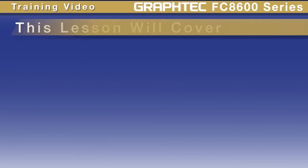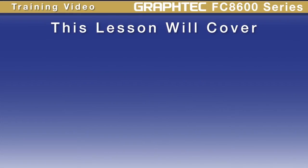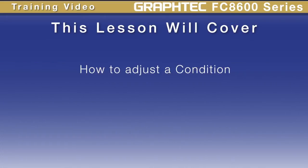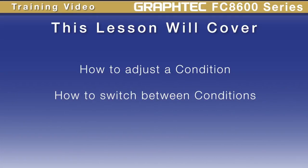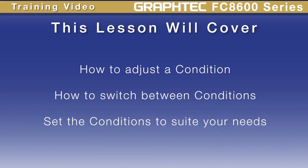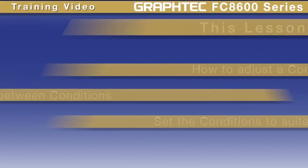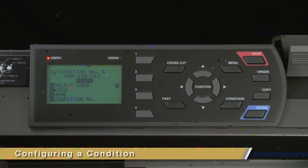The FC 8600 has a total of 8 cutting conditions. What we will cover is: first, how to easily adjust the current condition; then how to easily switch between conditions; and finally, how each condition can be configured to cut the different types of media you may be using.